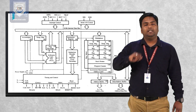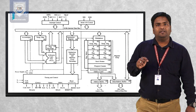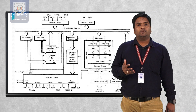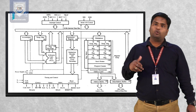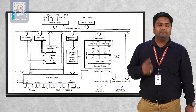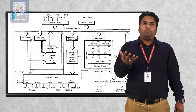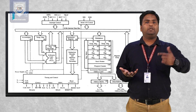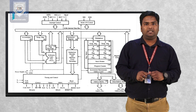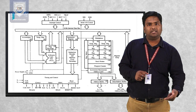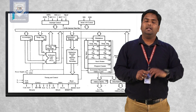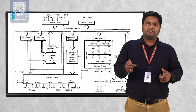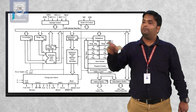Out of the 14 registers, 12 are 8-bit and two are 16-bit. The two 16-bit registers are the stack pointer register and the program counter register. The program counter points to the current instruction being executed, and it is automatically incremented to point to the next instruction. The next instruction's address is stored in the program counter. Since 8085 uses 16-bit addresses, the register size is 16 bits.